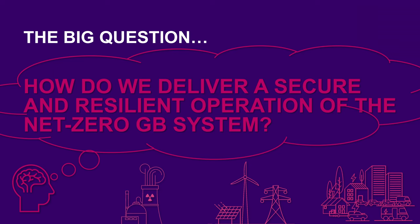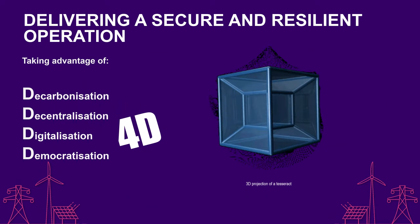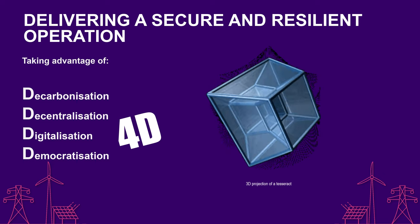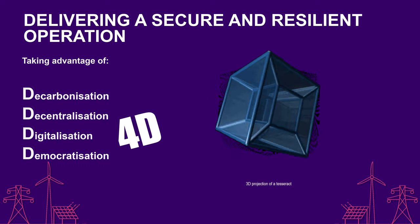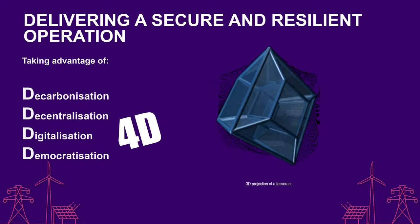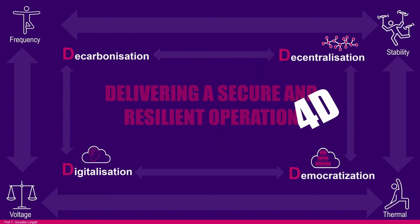Now we have the big question: how do we deliver a secure and resilient operation of the net zero GB system? In my opinion, I have a strong belief in the 4D framework — not because you are in a movie or cinema, but 4D stands for four very important words using the letter D: decarbonization, decentralization, digitalization, and democratization. I strongly believe that those 4D will help us solve the problem.